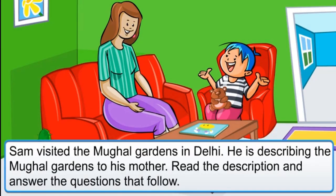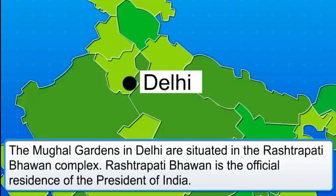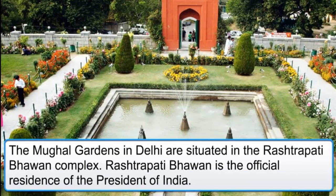Sam visited the Mughal Gardens in Delhi and is describing them to his mother. Read the description and answer the questions that follow. The Mughal Gardens in Delhi are situated in the Rashtrapati Bhavan complex. Rashtrapati Bhavan is the official residence of the President of India.